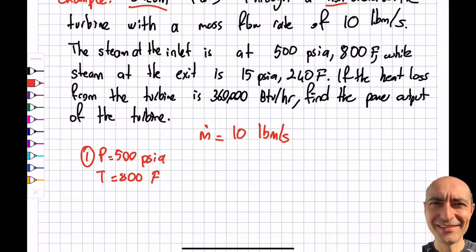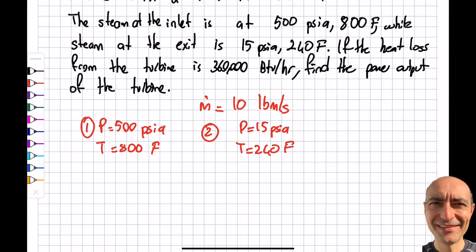While steam at the exit - the pressure will go down, which must happen in order for me to extract energy out of it. Typically the temperature significantly goes down as well. You can see the ranges I'm working with: fairly high pressure, 500 psia, goes to pretty much 15 psia, barely above the atmospheric 14.7. There's a heat loss of 360,000 Btu per hour.